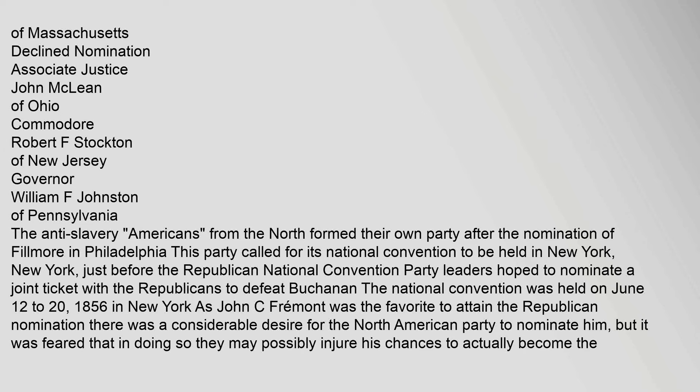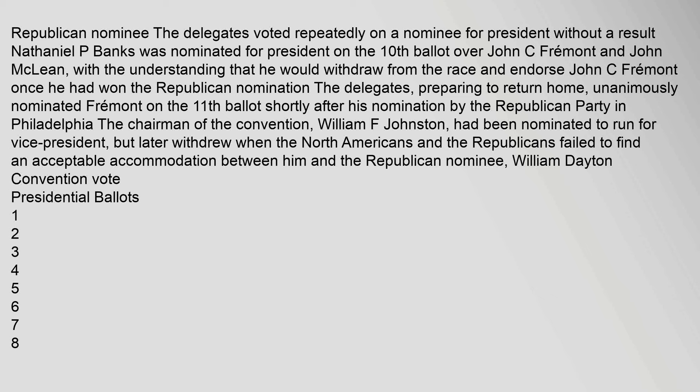The delegates voted repeatedly on a nominee for president without a result. Nathaniel P. Banks was nominated for president on the 10th ballot over John C. Fremont and John McLean, with the understanding that he would withdraw from the race and endorse John C. Fremont once he had won the Republican nomination. The delegates, preparing to return home, unanimously nominated Fremont on the 11th ballot shortly after his nomination by the Republican Party in Philadelphia.